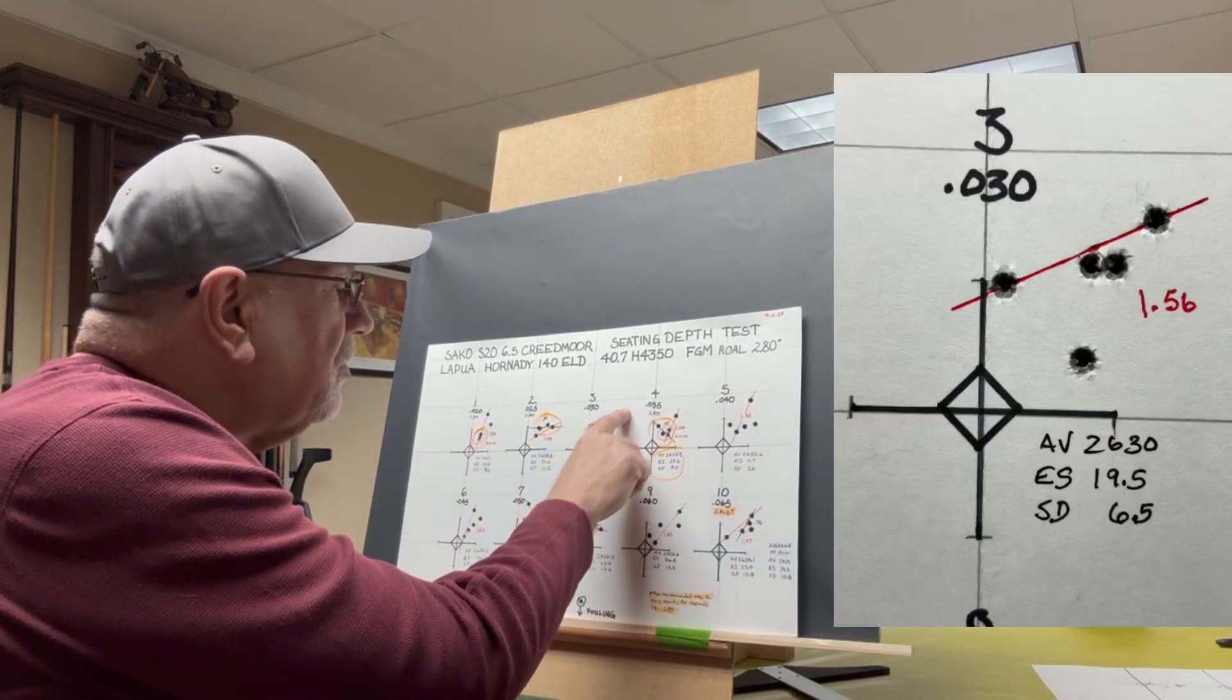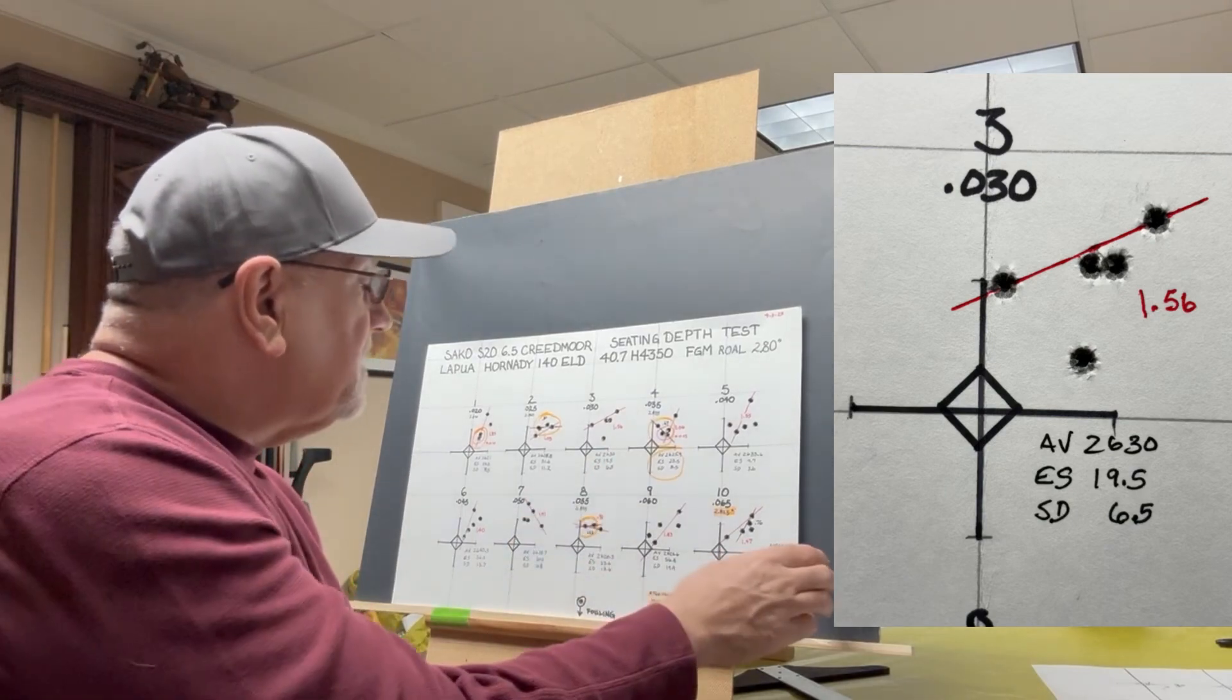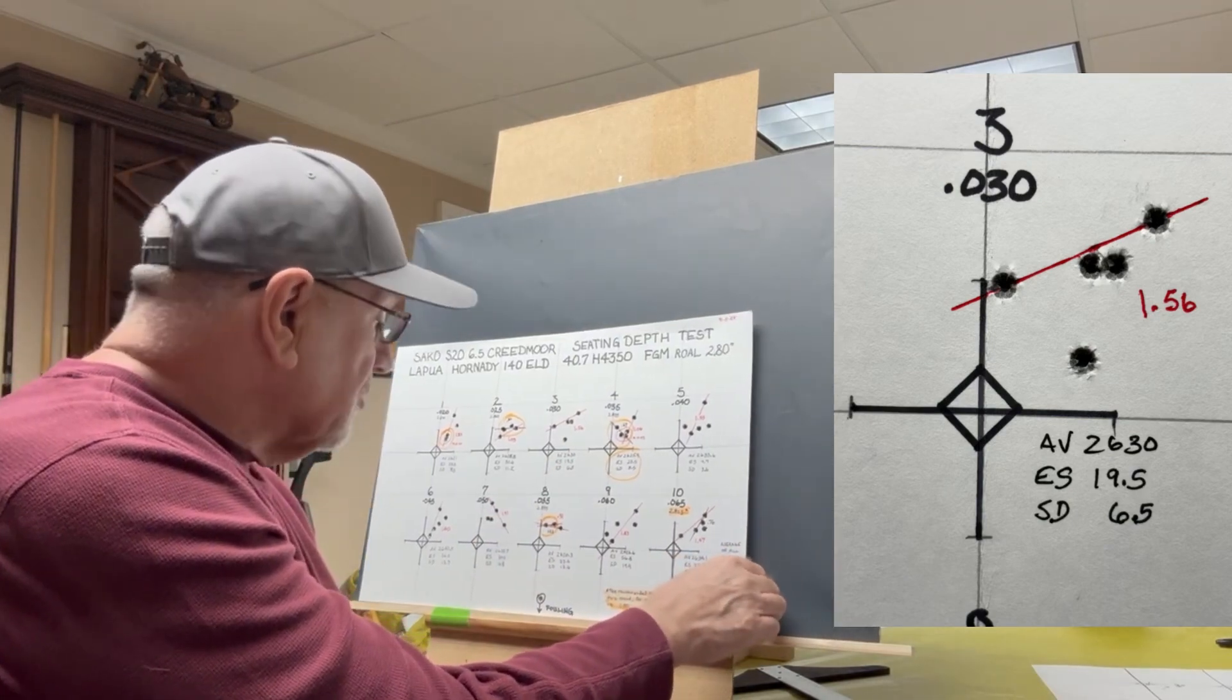At 30 thousandths off, we've got a group size of 1.56, even though it's got a standard deviation of 6.5. Still didn't group well.